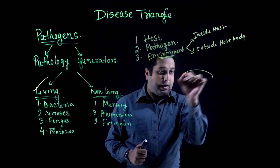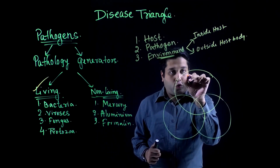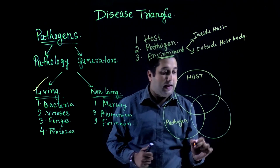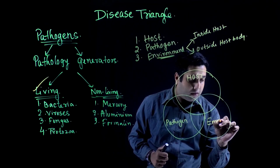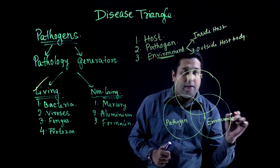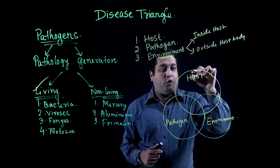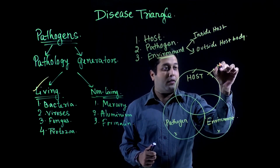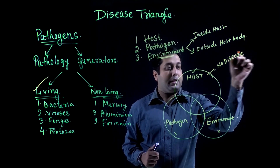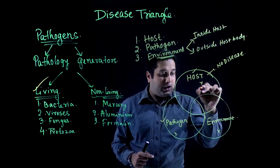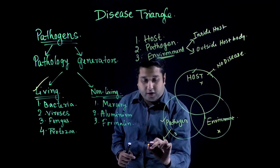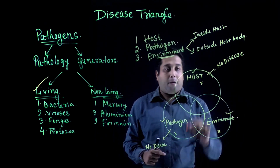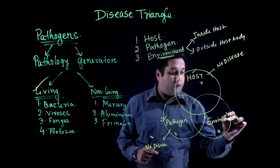According to the disease triangle, we have to consider the host, pathogen (mainly living), and the environment. It is proven that if only the host is present and pathogen and environment are absent, disease cannot occur. Similarly, if the pathogen is present but host and environment are absent, disease cannot occur. Again, if the environment is present but host and pathogen are absent, disease cannot occur.